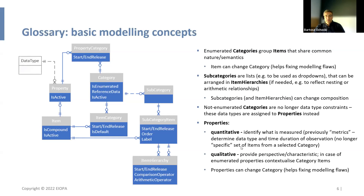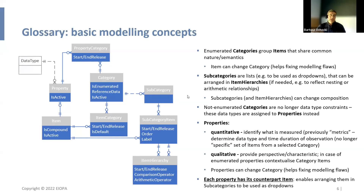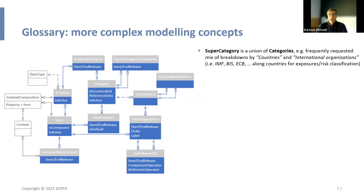Properties can also change categories. By having a counterpart item for each property, we are able to provide information without much duplication of the model. We have supercategories to address situations when elements not sharing the same semantic nature need to be combined in a single list — a common situation is countries mixed with international organizations for some drop-downs. With a supercategory, we can link two subcategories and create a supercategory with that composition.